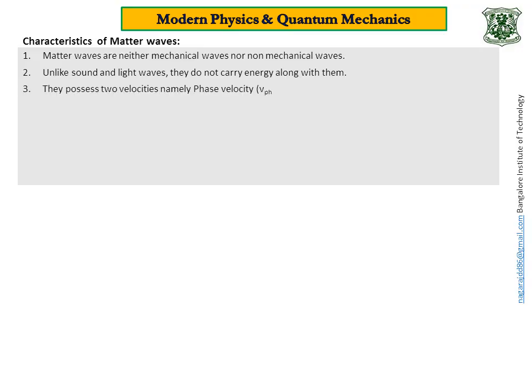Next one, they possess two velocities namely, phase velocity and group velocity. I define these two velocities later on. Phase velocity is greater than speed of light. Hence, it does not carry any physical significance. So, therefore, we do not give much importance to phase velocity of matter waves.